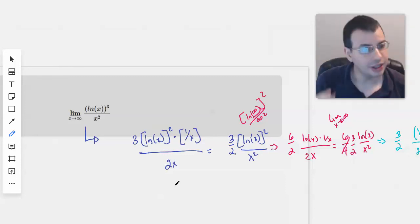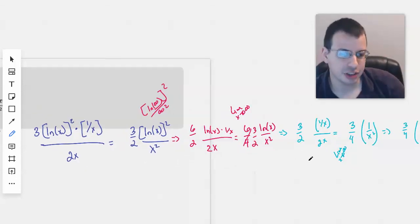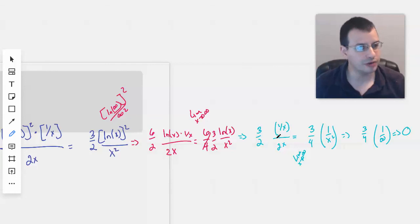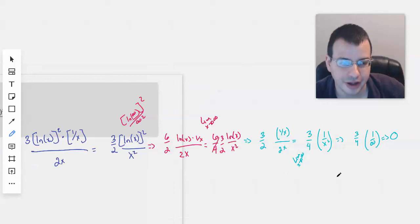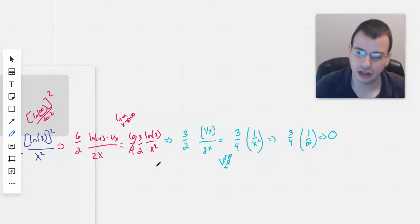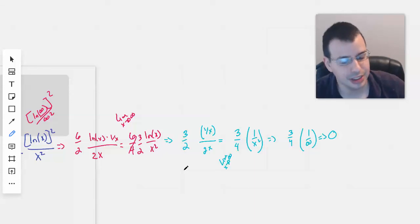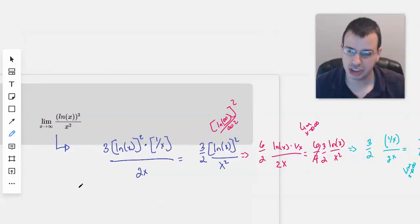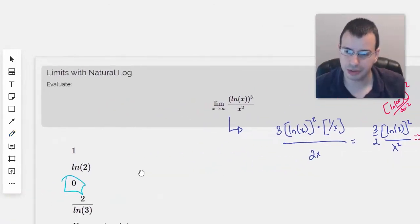And it turns out that was the case. Eventually our natural log of x disappeared into 1 over x, which helped preserve that x squared in the bottom. Eventually we got 3 fourths times 1 over x squared. Taking the limit as x approaches infinity of that gave us 0. So that's how you would approach this problem.